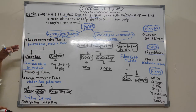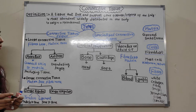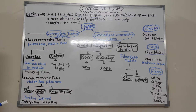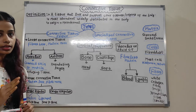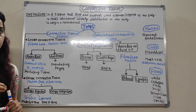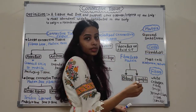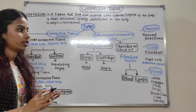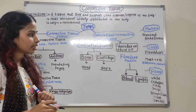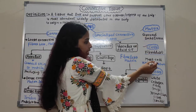Connective Tissue Proper is divided into two parts: Loose and Dense Connective Tissue. Loose means fibers are less but matrix is more. Basically, three elements are present in Connective Tissue: Matrix, Cells, and Fibers. However, in Vascular Connective Tissue, a fiberless matrix is present.